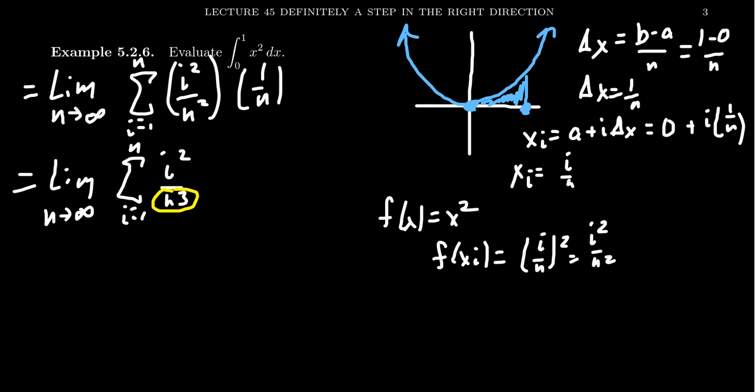Now this n cubed is constant with respect to the variable i. So the sum, the sigma, it changes the i. It doesn't change the n. And so this n cubed can be factored out of the sigma. And then when we do that, we get the limit as n goes to infinity of one over n cubed times sigma. Again, sigma will go from i equals one to n. And then we get an i squared right there. Let me kind of partition those from each other right there.